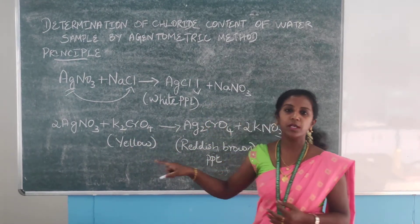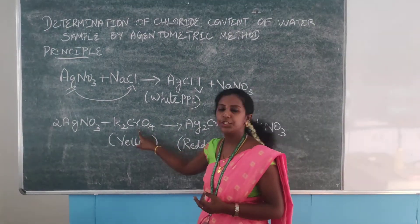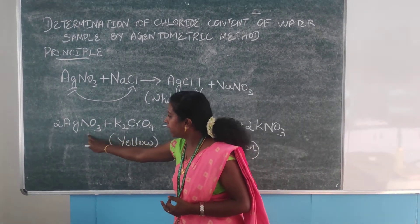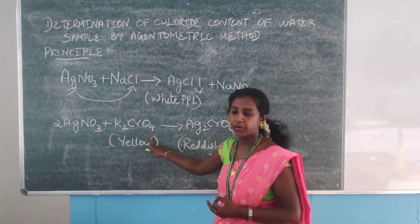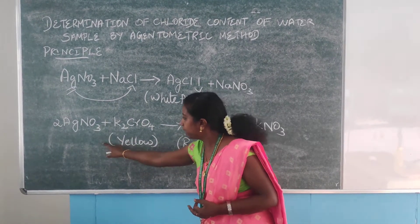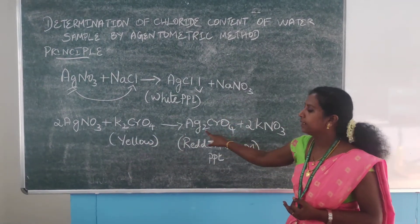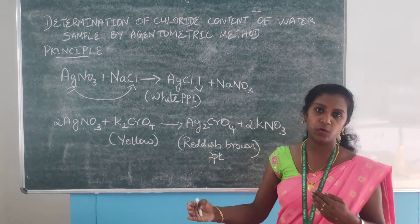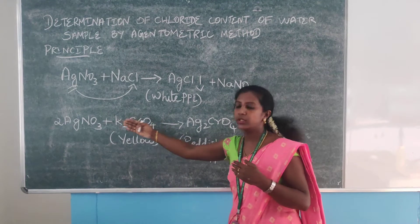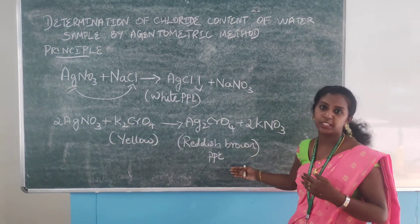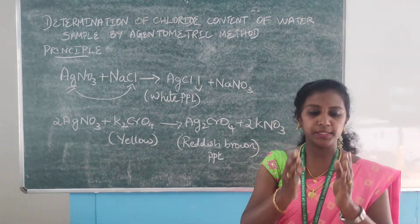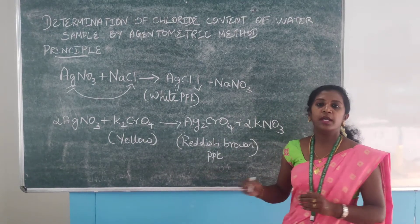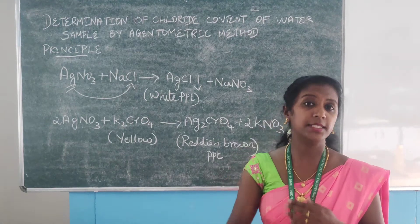In the second step, we move towards the indicator. Here I am using potassium chromate as the indicator. When all the chloride ions are removed in the first step, the second step is titrating silver nitrate with potassium chromate. The color of potassium chromate is yellow. When silver nitrate reacts with potassium chromate, it gives the product silver chromate, which is a reddish brown precipitate. So the chloride ions are removed from the water sample in the first step, and in the second step the indicator reacts with silver nitrate to give the end point as reddish brown precipitate.